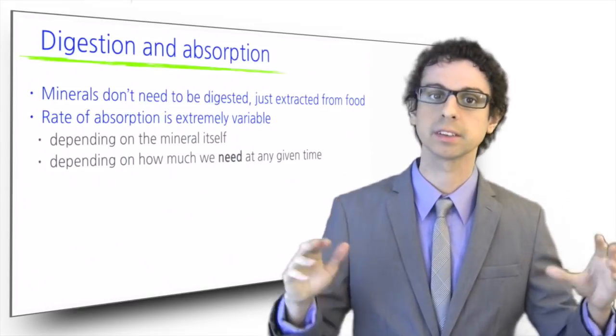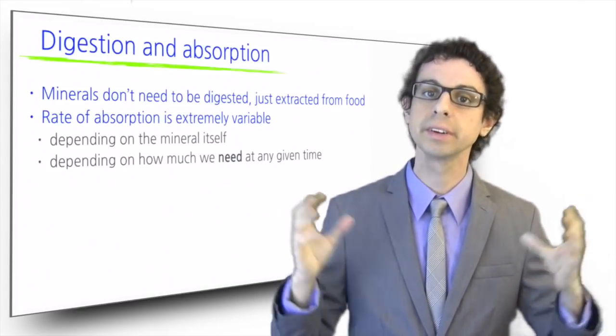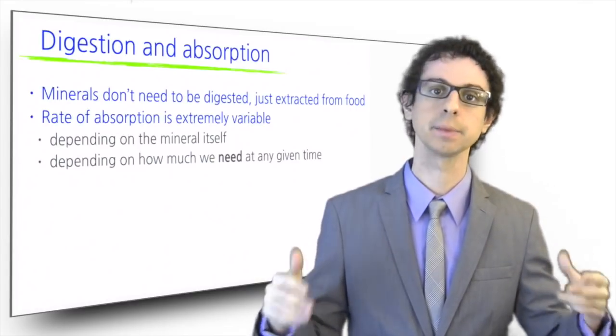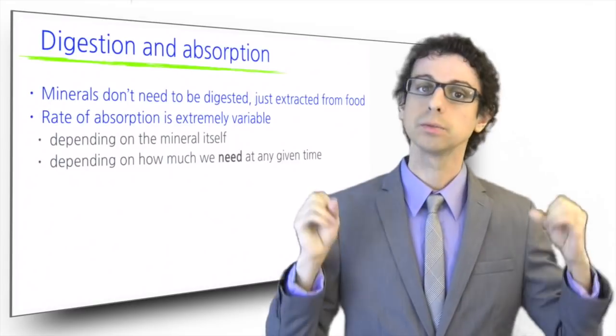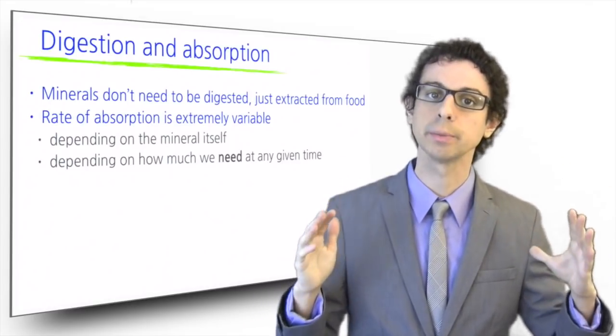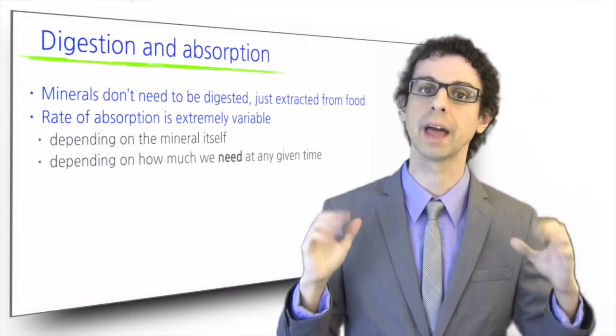Some minerals, such as sodium or potassium, are absorbed freely or at a very high rate. For some other minerals, absorption is much more limited. For example, less than 5% of the chromium present in food is absorbed on average.